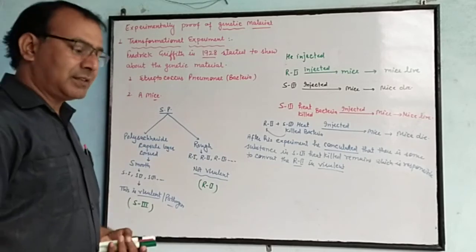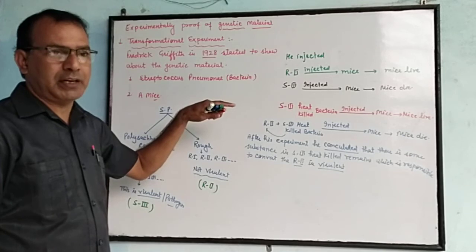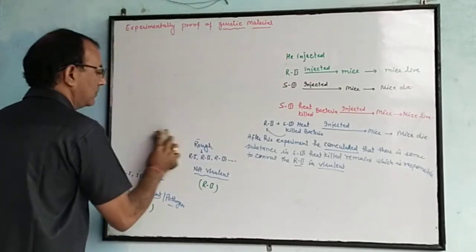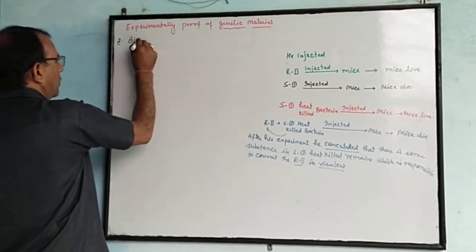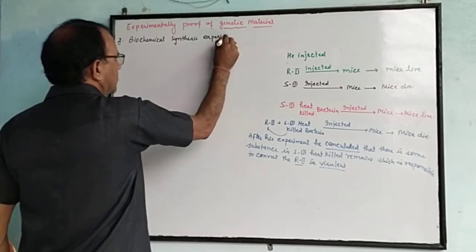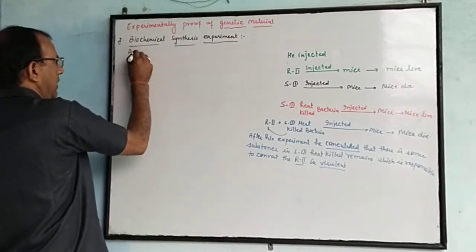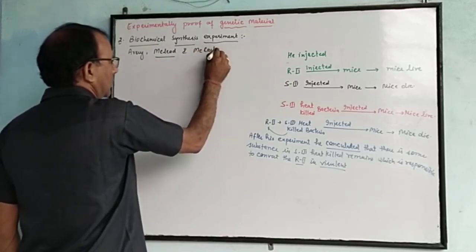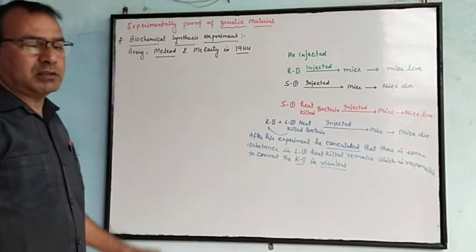After Griffith, 16 years later, three scientists — Avery, Macleod, and McCarty — re-experimented on Griffith's experiment using certain enzymes. That experiment is known as the Biochemical Characterization Experiment, proposed in 1944. They also used Streptococcus pneumoniae bacteria and mice, but with the addition of certain enzymes.